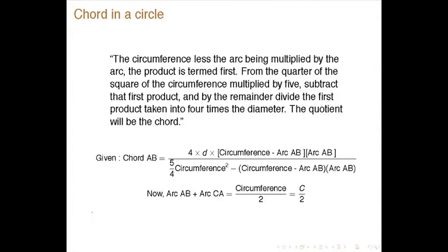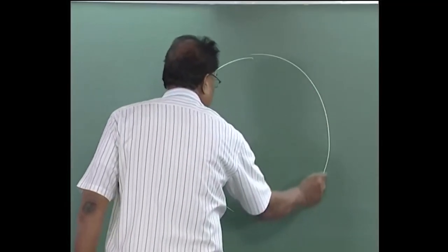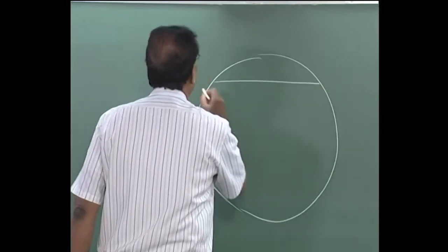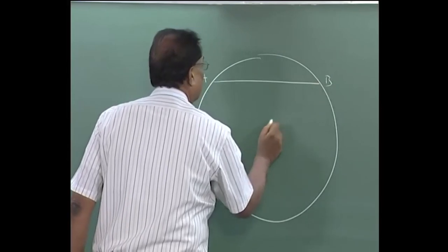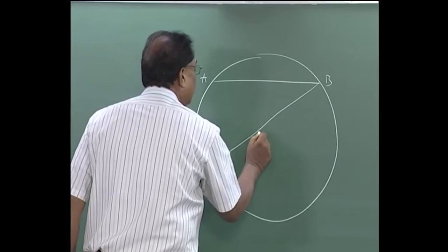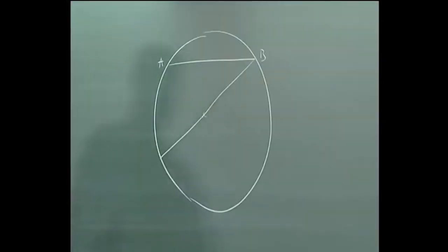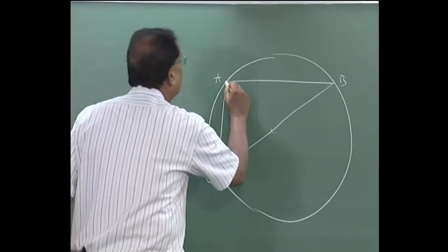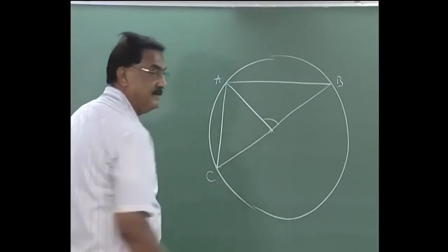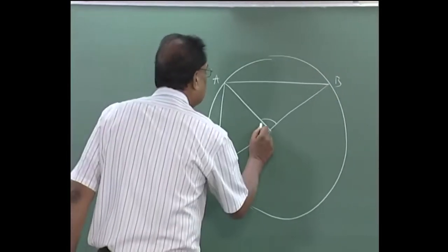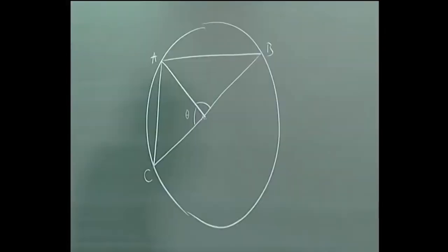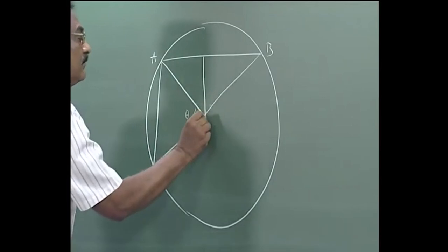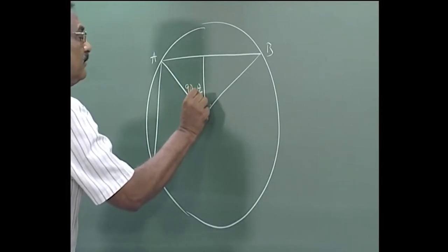This is a very important result. Writing the figure on the board: this is AB, and this is your diameter, called C. The arc need not be large; it will be within the semicircumference. Let the angle be θ. Then this angle is 90 minus θ/2.